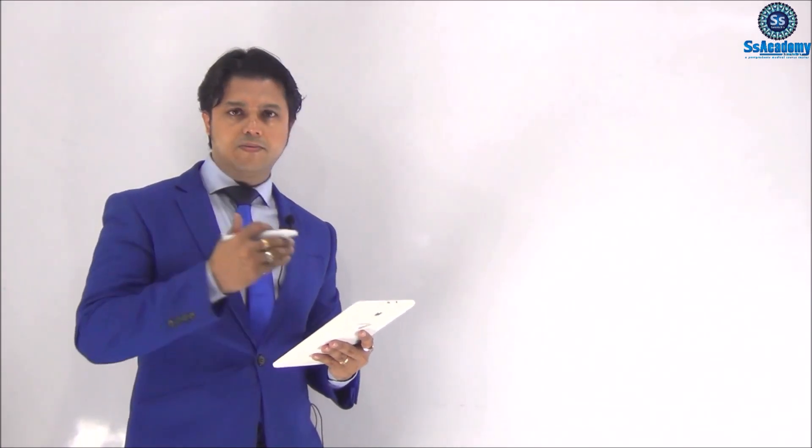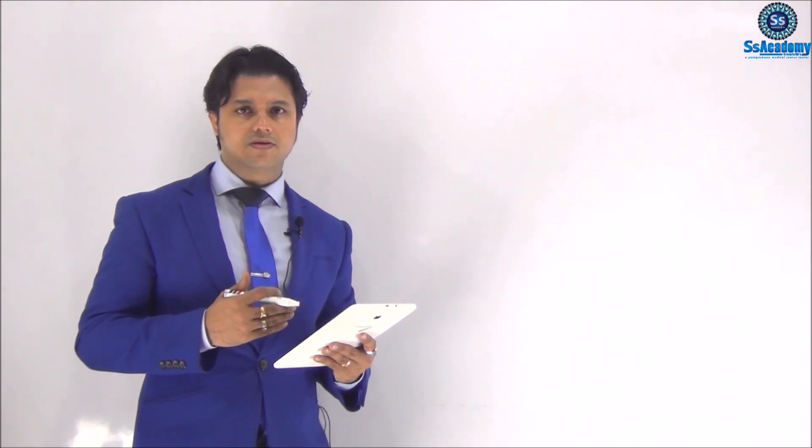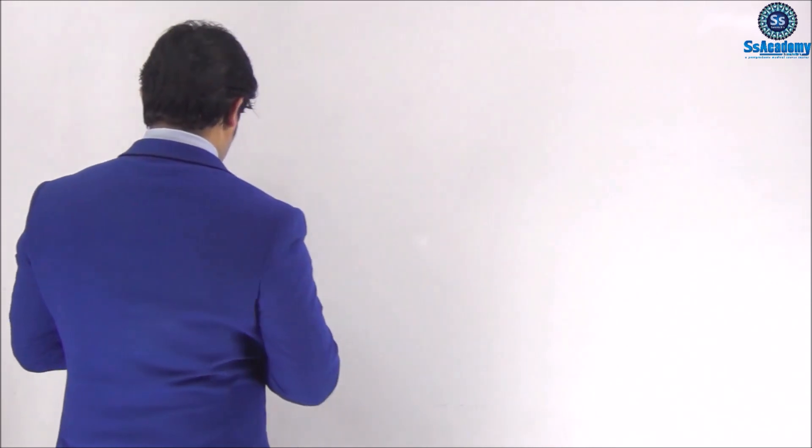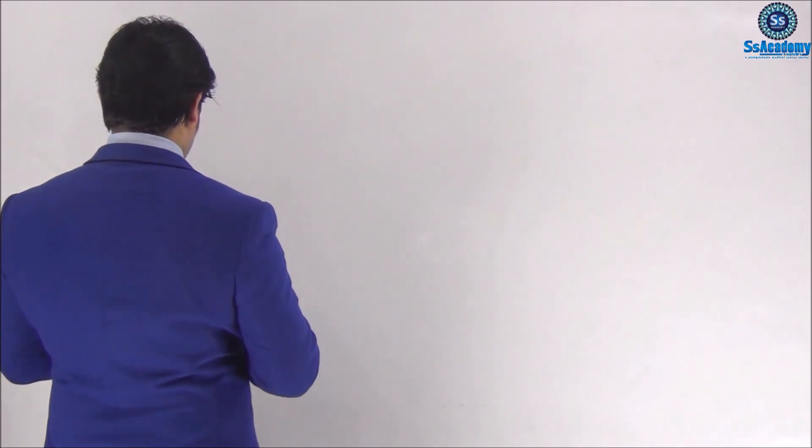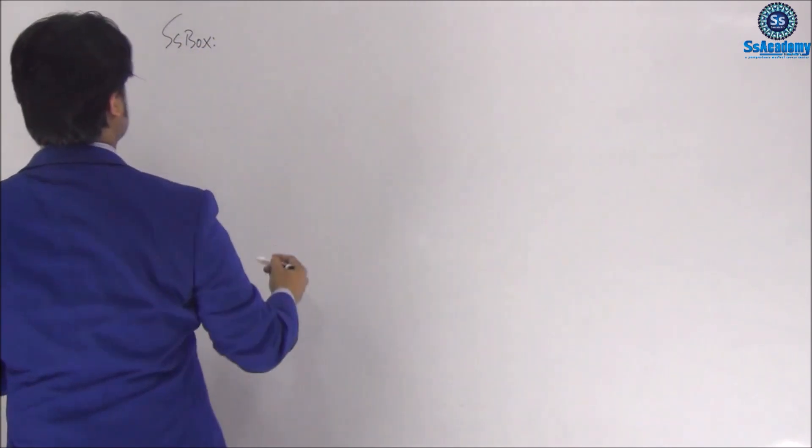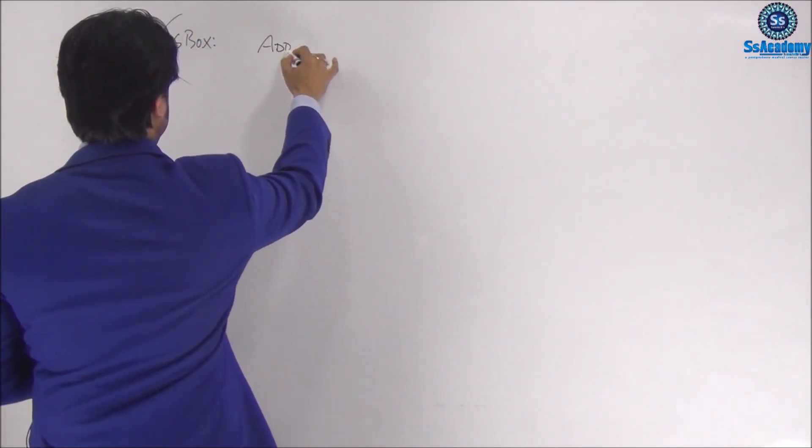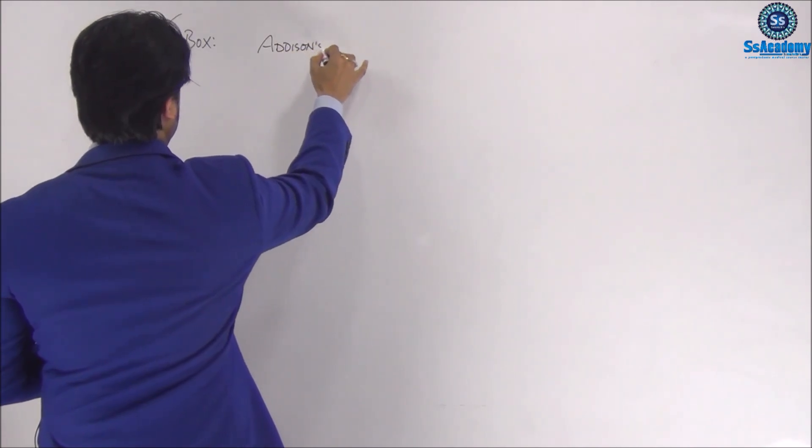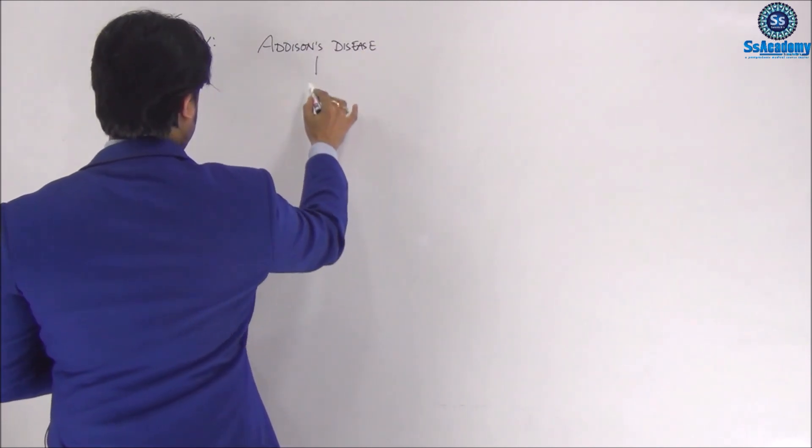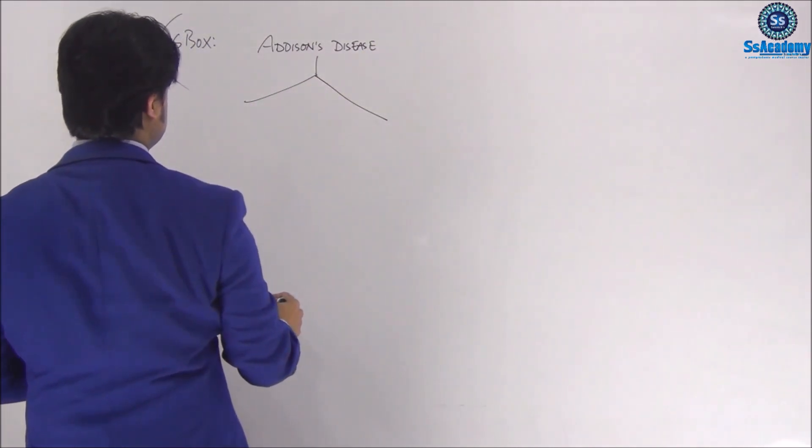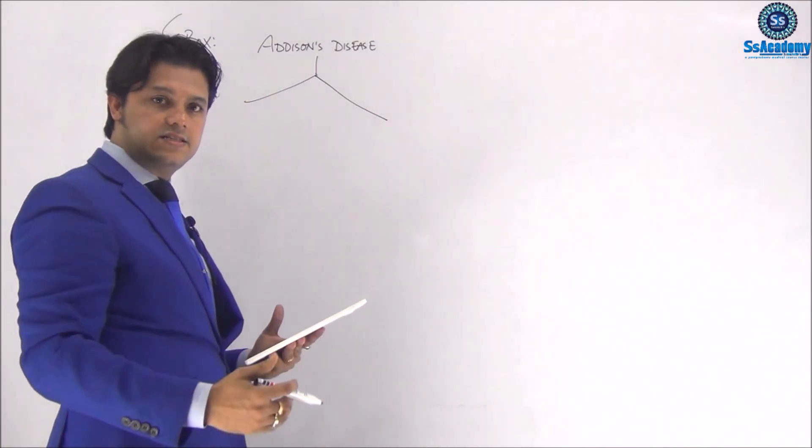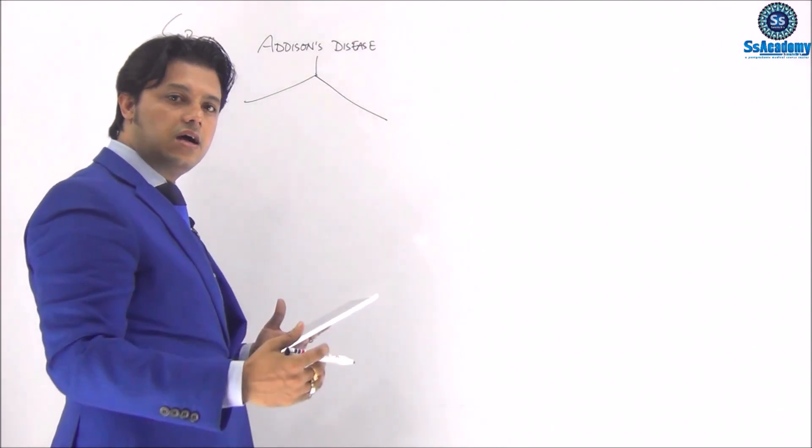Let's talk about the boxes. These boxes will be helpful. Just look at the board. What I am saying: actually, Addison's disease is strongly associated with two categories of disease. Autoimmune adrenalitis, meaning autoimmune adrenal gland disease, is strongly associated with other diseases.